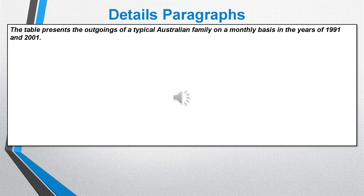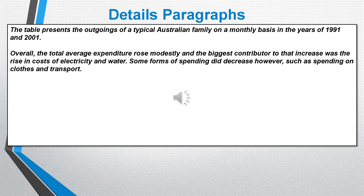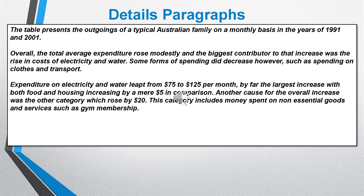Finally, we're going to write our details paragraphs. We're going to write two details paragraphs. It makes sense therefore to write one paragraph about items that have increased in expenditure and the second paragraph about items that have decreased in expenditure. So we've grouped the data together logically into two groups, so we can write two separate paragraphs in a logical fashion. We'll start with the expenditure that increased first.